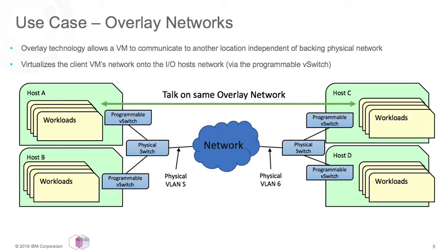The PowerVM NovaLink hosts create VXLAN tunnels between each other. Each host — specifically the NovaLink LPAR on your PowerVM system — will create a tunnel to the other hosts in the network. The VMs or LPARs never directly send traffic over the network; instead, their traffic gets embedded into these tunnels.